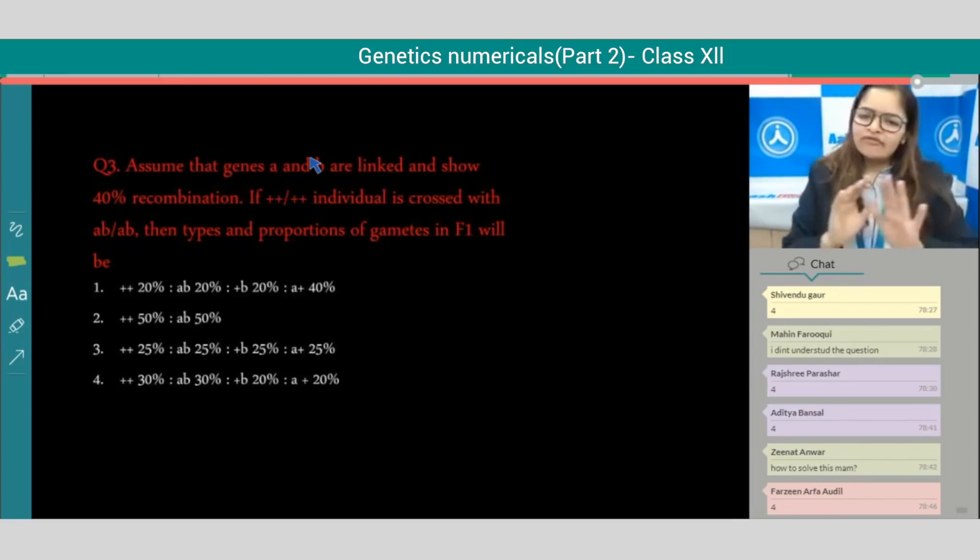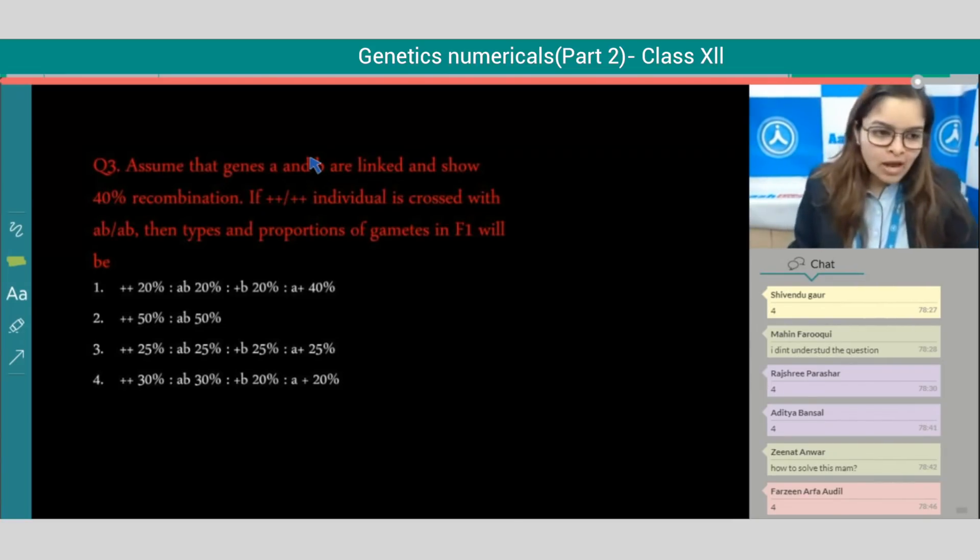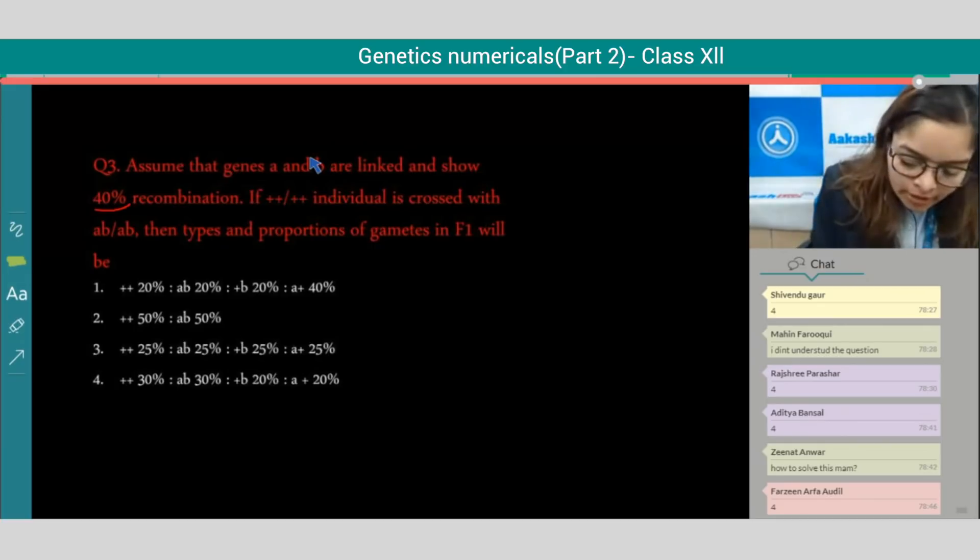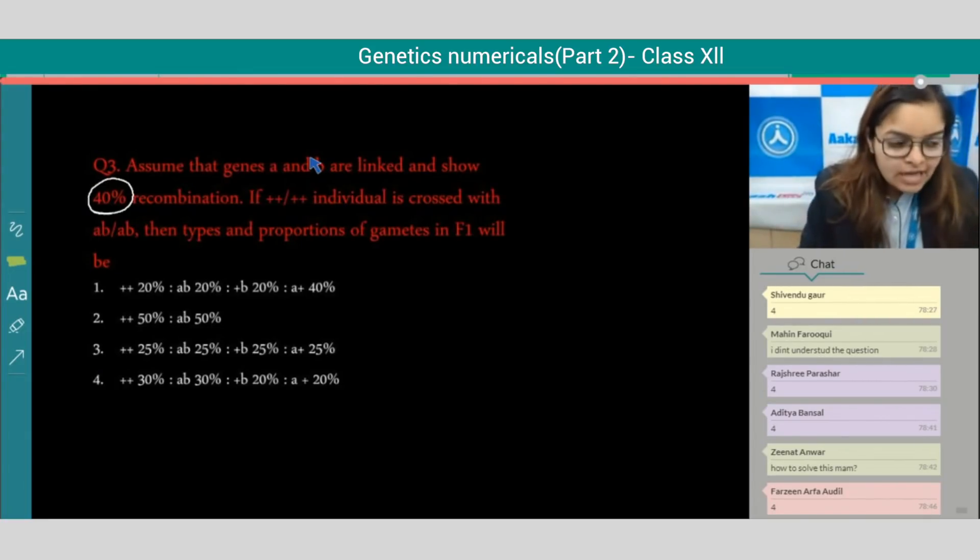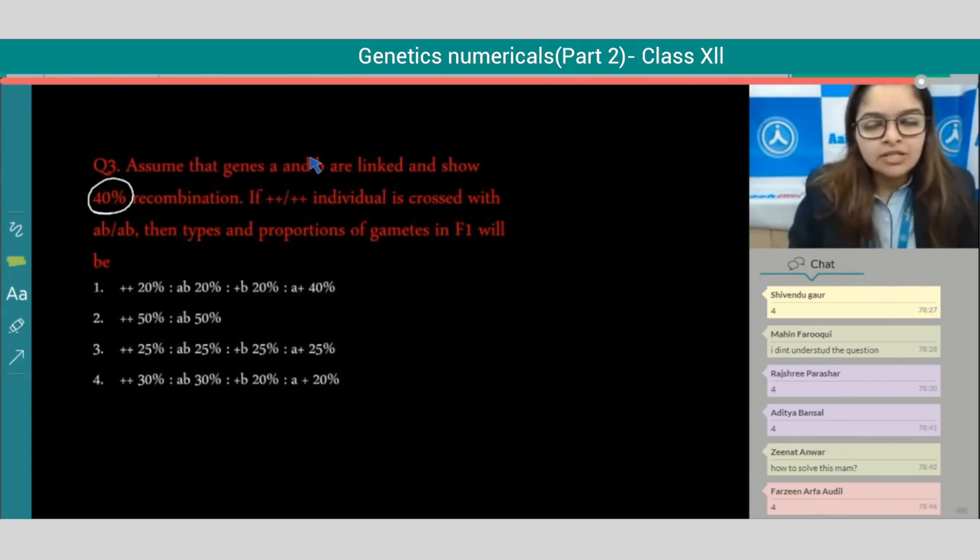Zena, the question is very easy. What you have to see - assume that genes A and B are linked, they show 40 percent recombination. Don't go on the words, just mark the point: 40 percent recombination. If we have 40 percent recombination...